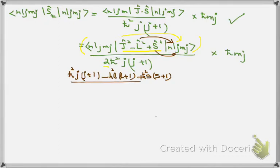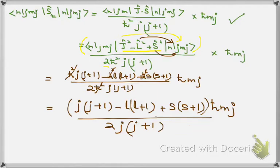Divided by 2ℏ², J(J+1) multiplied by ℏmj. These ℏ² cancel with this. Finally, expectation value of Sz has this value.